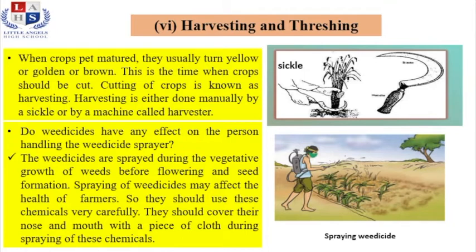Harvesting is the process of gathering crops from the fields. A farmer usually waits for the crops to turn yellow, golden, or brown — in other words, completely ripe. When the right time comes, the farmer cuts them. Harvesting is either done manually using a sickle, as shown in the picture, or by a machine called a harvester.